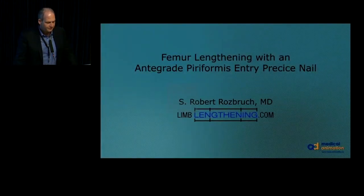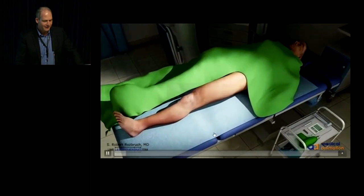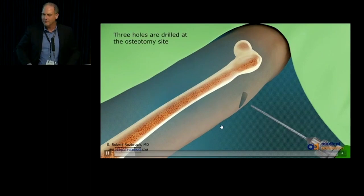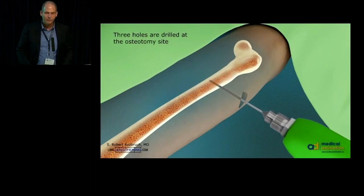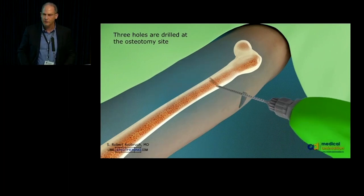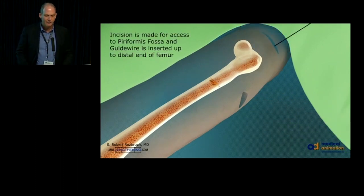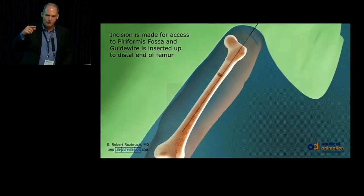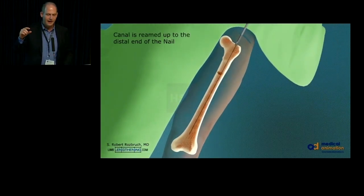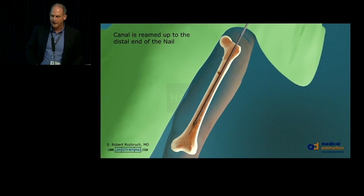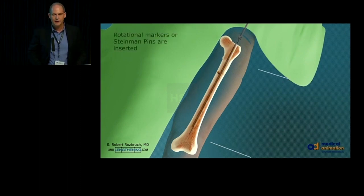Here's a little animation of antegrade lengthening. It's a very minimal incision technique. We start off after we choose our osteotomy level. We make percutaneous drill holes at that point through a little pinhole incision. Next, with a little adduction, we make a small incision and insert a wire into the intramedullary canal. The canal of a long bone is hollow like a pipe, and we ream and prepare the canal.